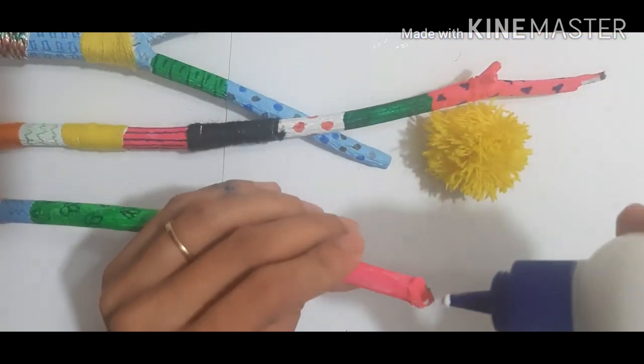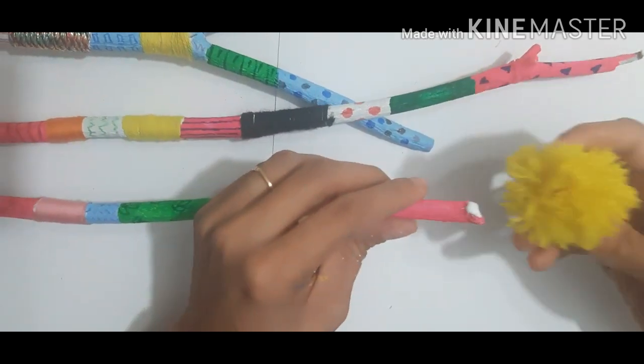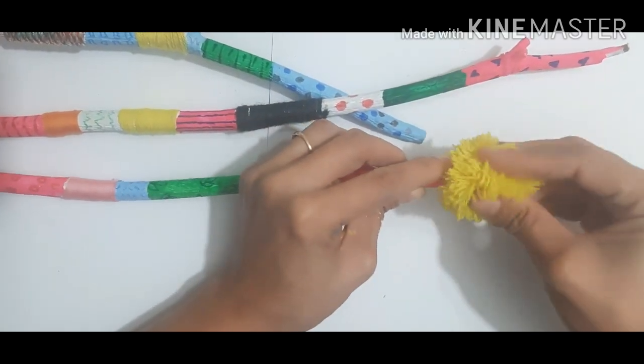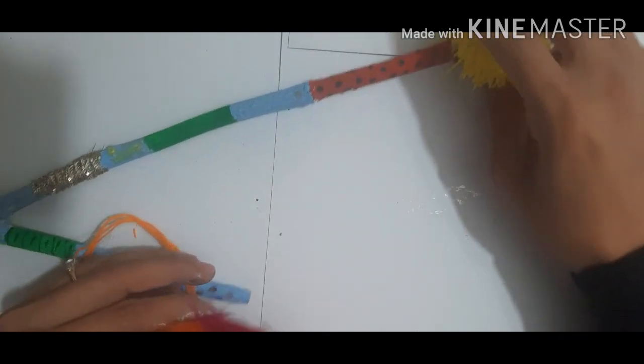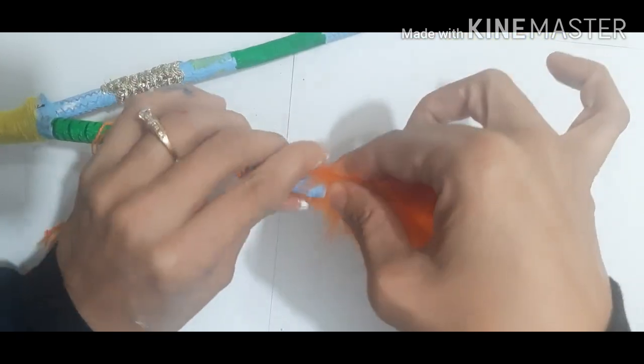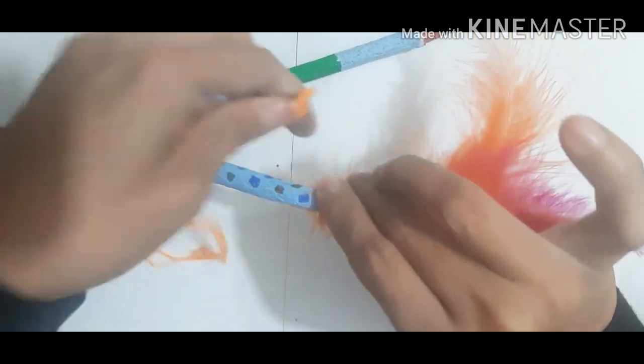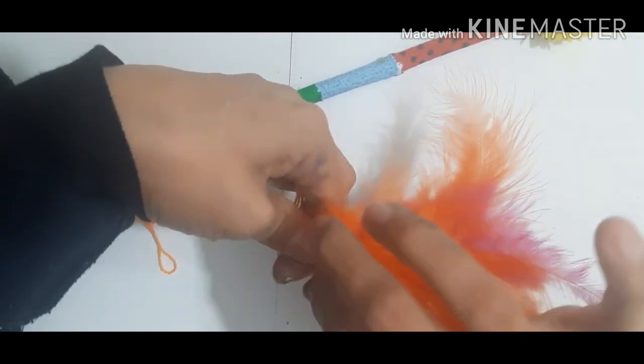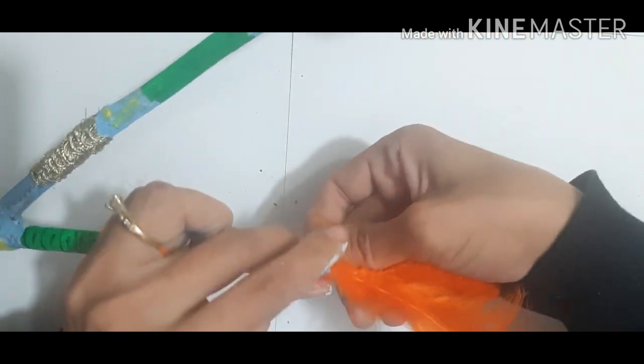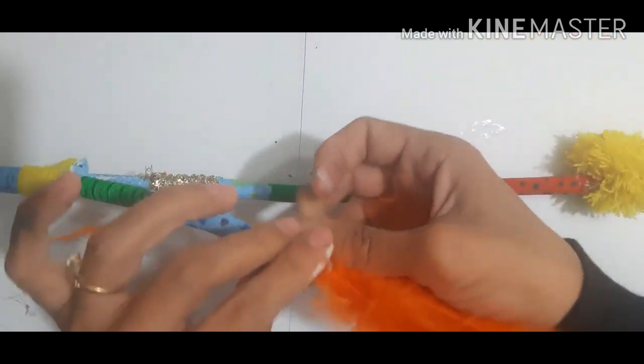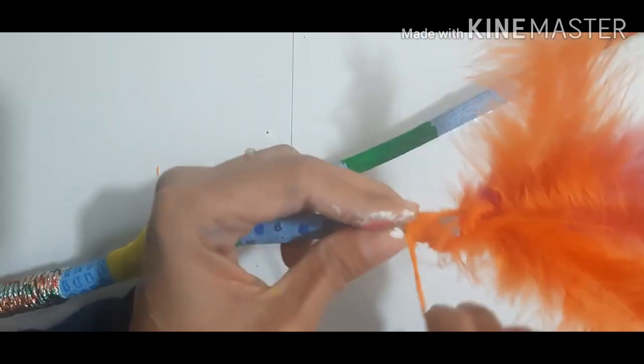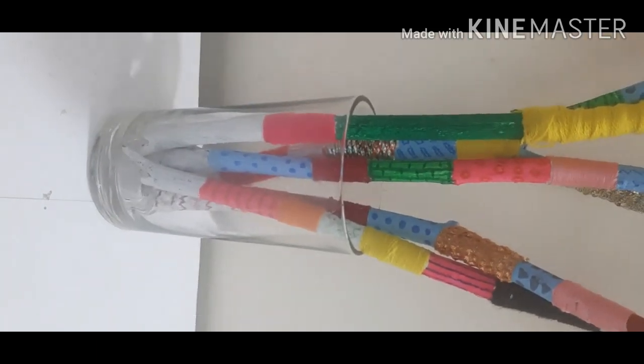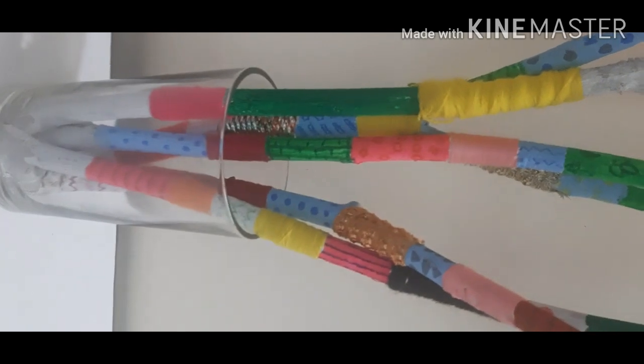Take fabric glue and put the pom-pom here. You can add pom-poms and you can add feathers also, it's up to you. If you don't have feathers, you can put pom-pom. Just wrap this here. Take help of your parents in this. This way you can decorate your sticks.